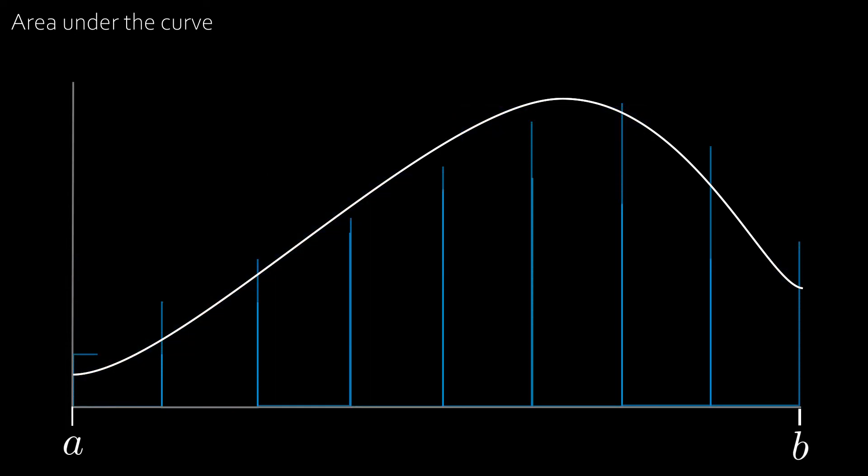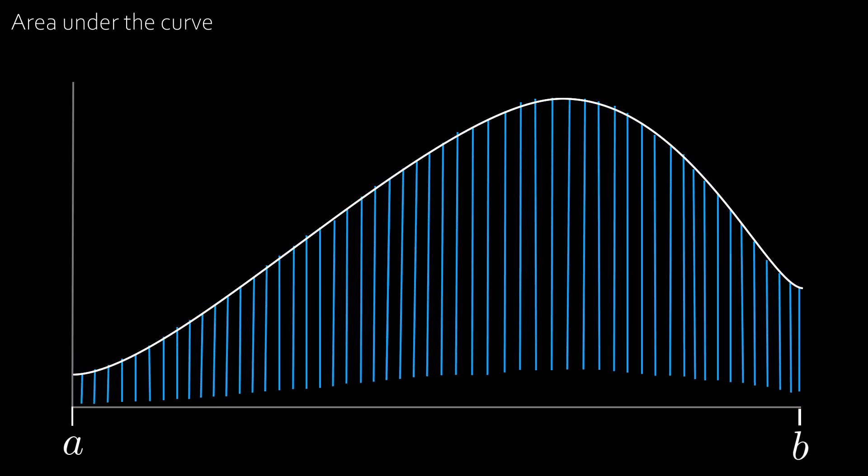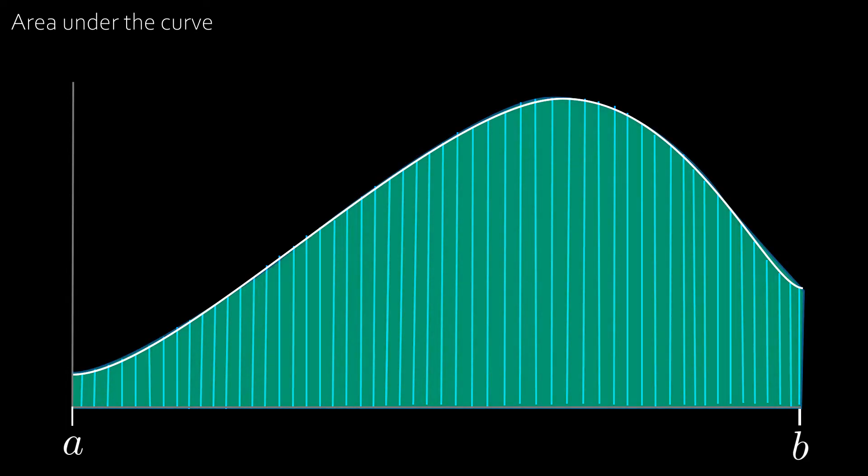Let's now try eight rectangles instead. And you really start to see that we're getting very close to the area under the curve. So that means if we had an extremely large number of rectangles which are extremely small in length then we would get the exact area under the curve.